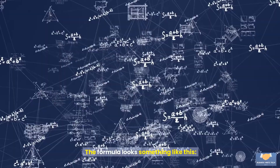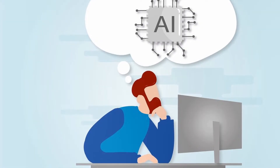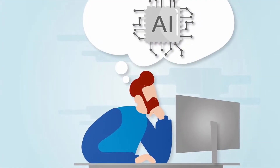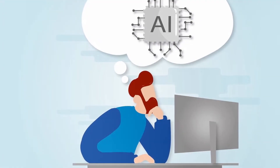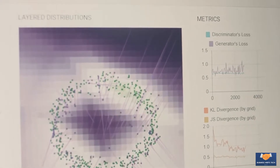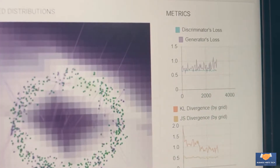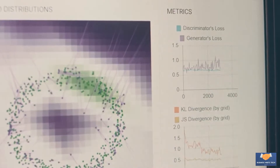The formula looks something like this: y is the predicted value, x is the input feature, b0 is the intercept, and b1 is the slope. The algorithm learns the best values for b0 and b1 to minimize the difference between the predicted and actual values.